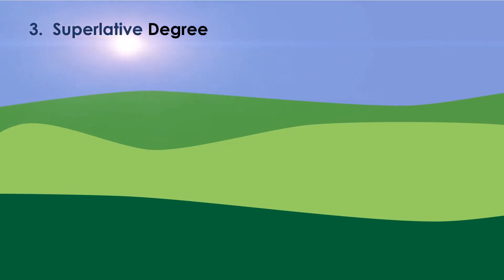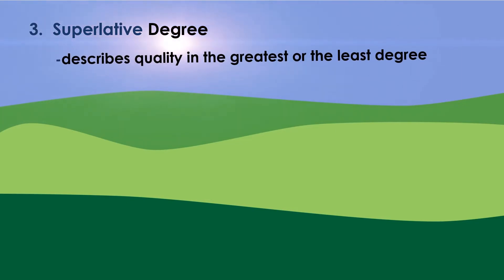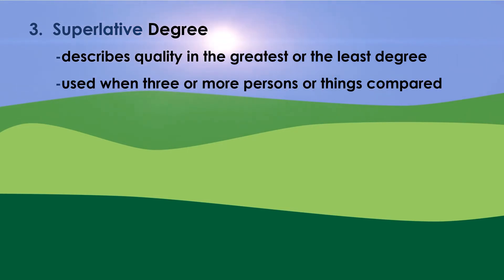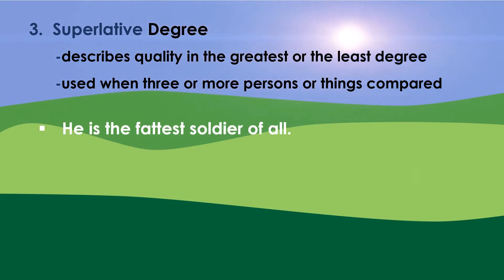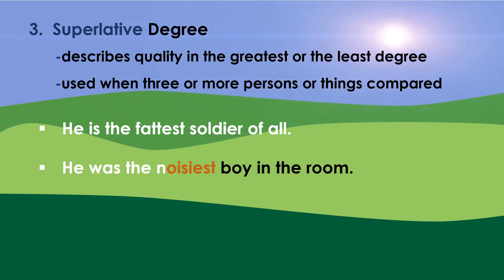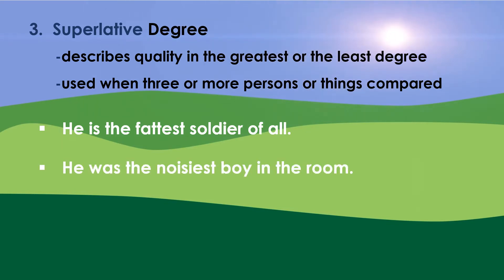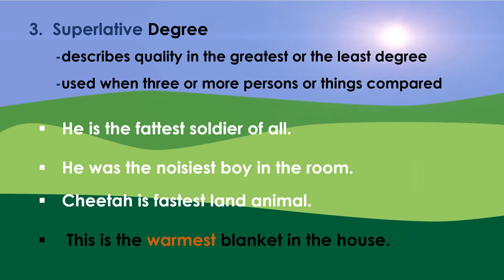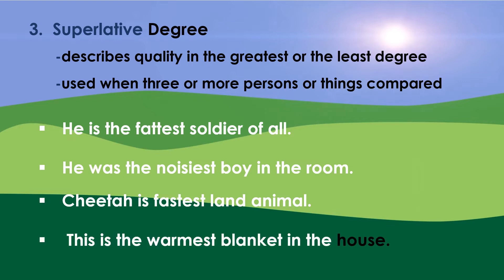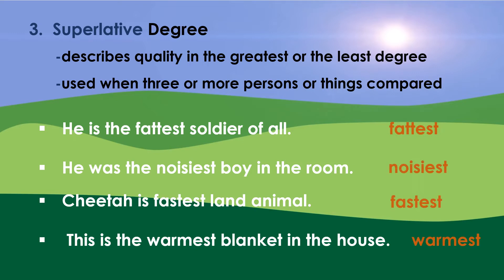Superlative degree describes quality in the greatest or least degree. It is used when three or more persons or things are compared. For example: he is the fattest soldier of all; he was the noisiest boy in the room; the cheetah is the fastest land animal; this is the warmest blanket in the house. Fattest, noisiest, fastest, and warmest are adjectives in the superlative degree.